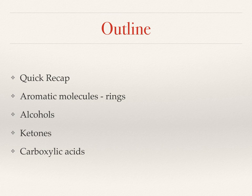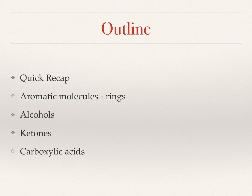As usual an outline for the video is given here. We'll start with a very quick recap of previous material and then we'll look at aromatic molecules, that is to say carbon containing molecules where the carbon atoms are arranged in a ring. We'll then look at what happens if you take some alkanes and alkenes and add oxygen to them, and we'll see this is how we start to form alcohols, ketones and carboxylic acids.